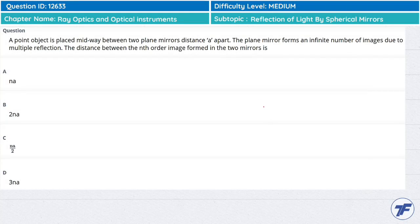A point object is placed midway between two plane mirrors distance 'a' apart. The plane mirrors form an infinite number of images due to multiple reflection. The distance between the nth order image formed in the two mirrors is...